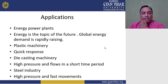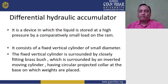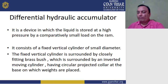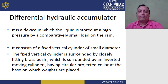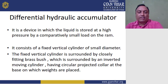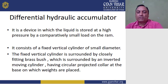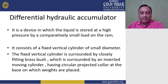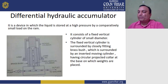Next is the differential hydraulic accumulator. A differential hydraulic accumulator is a device in which liquid is stored at high pressure by a comparatively small load on the ram. It consists of a fixed vertical cylinder of small diameter, surrounded by closely fitting brass bushes, which is surrounded by an inverted moving cylinder having a circular projected collar at the base on which the weight is placed.